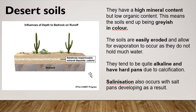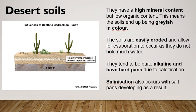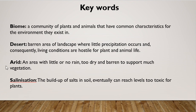Salinization also occurs in desert soils. Minerals get deposited in the top layer of soil and, because of the impermeable hard pan layer, do not soak down to the bottom of the soil where they are also needed — they stay at the top. A buildup of too many minerals, and salt in particular, causes salinization to occur. As we defined earlier, salinization is the buildup of salts in soil, which eventually can cause salt to reach toxic levels that are too toxic for plants.